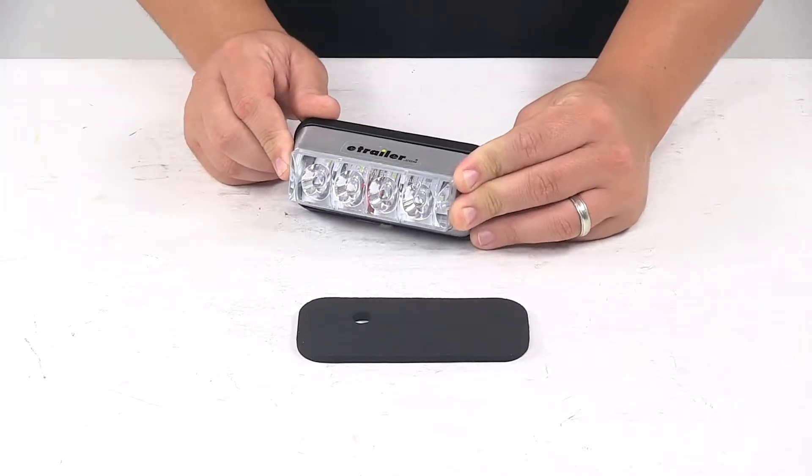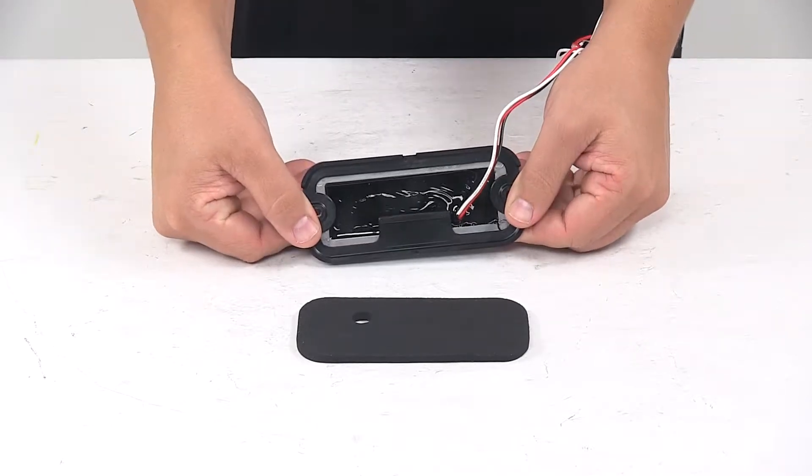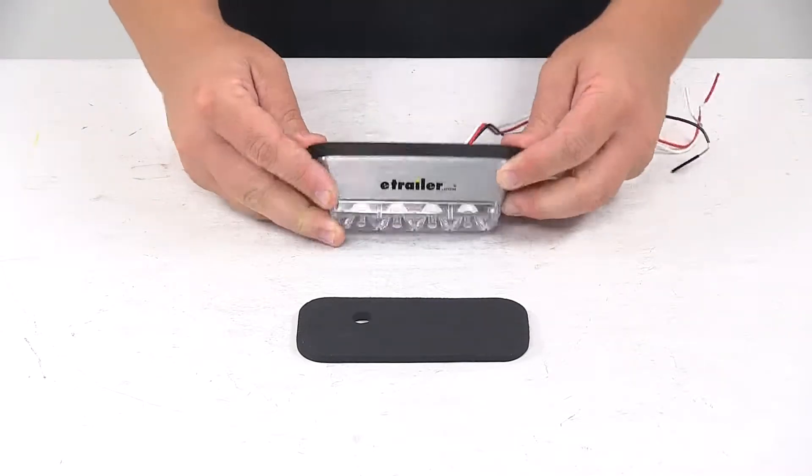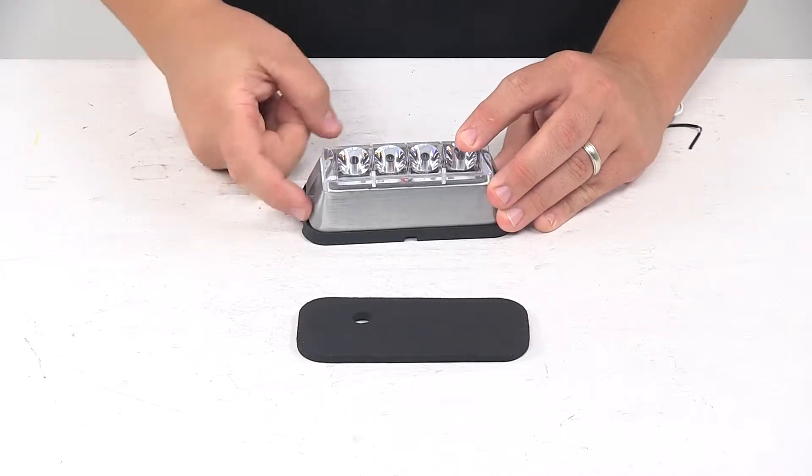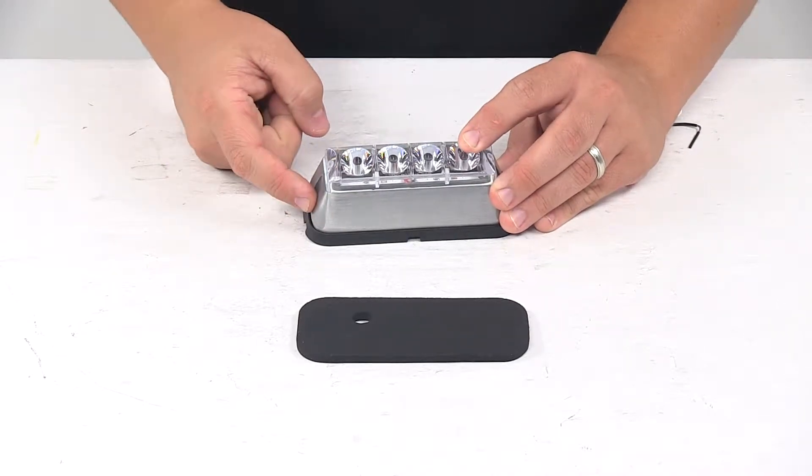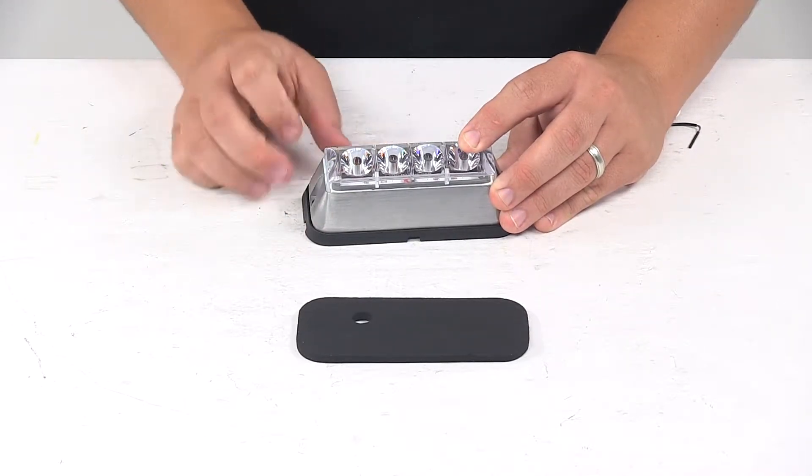The versatile clear strobe light is rated IP67 for water and dust resistance. It's SAE J595 class 2 rated. It has a really nice heavy-duty aluminum housing. It's very strong, durable, and rust and corrosion resistant.